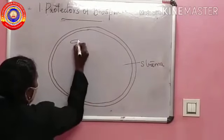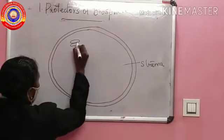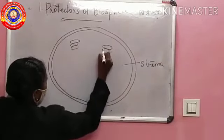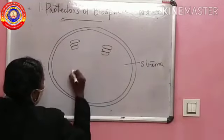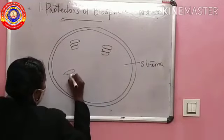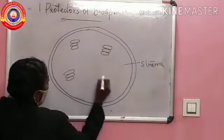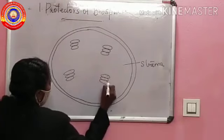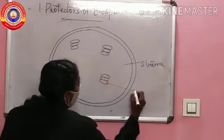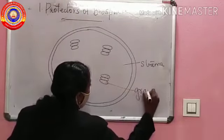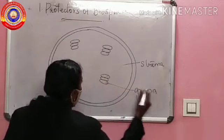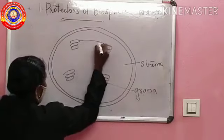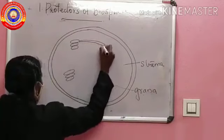Membranous sacs are arranged one above the another, which is called grana. Each grana is connected by stroma lamella.